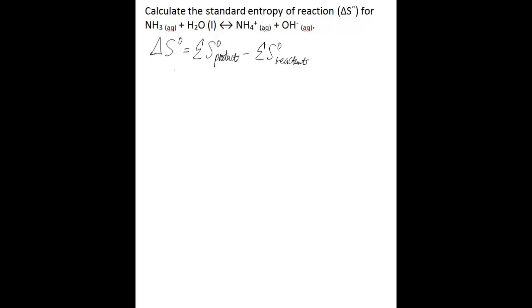In this case, you have your products as ammonium and hydroxide. So what you're going to want to do is look up the standard molar entropy of ammonium in aqueous form and add that to the value for the standard molar entropy of hydroxide, also in aqueous form.